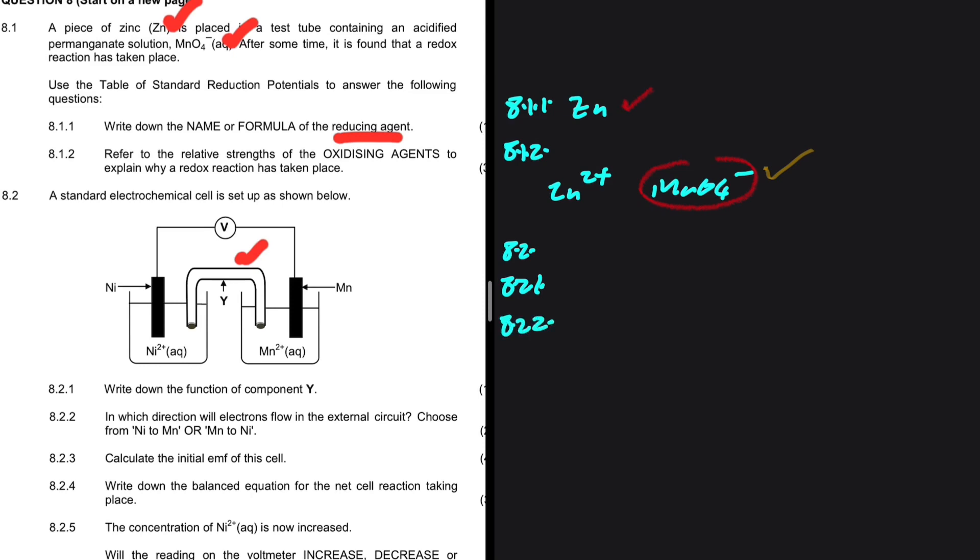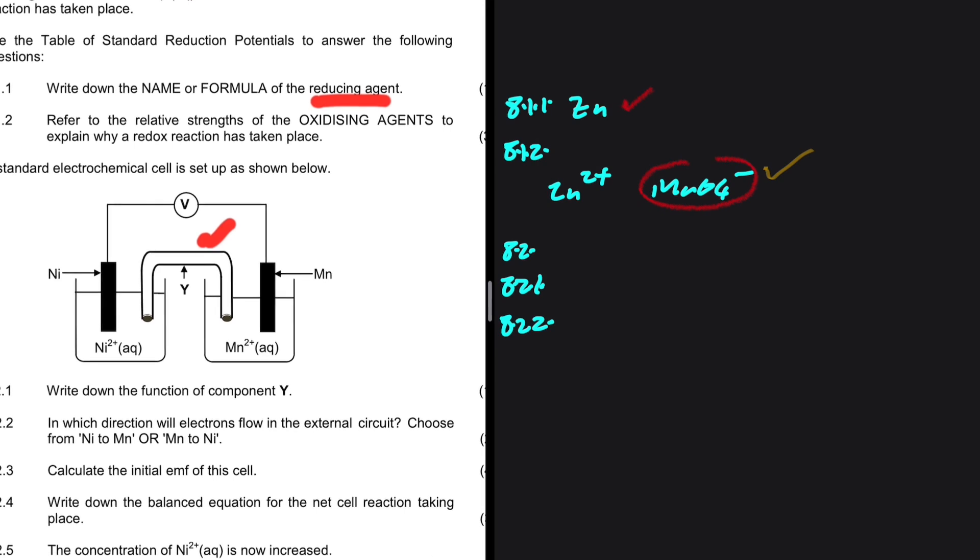8.2.2. In which direction will electrons flow in the external circuit? Choose from Ni to Mn or Mn to Ni. This means that now we need to determine whether Ni or Mn is the anode or the cathode. We have to go back to our table of reduction potentials. Mn is a stronger reducing agent, so this is where oxidation takes place. And we know that oxidation takes place at the anode.